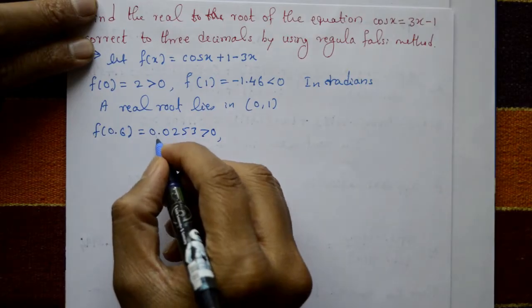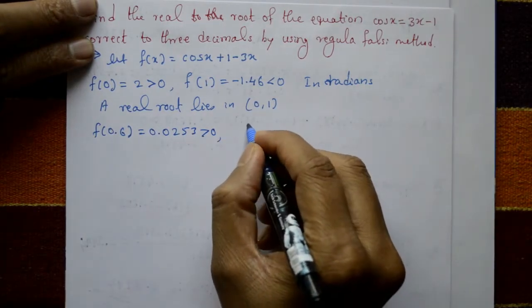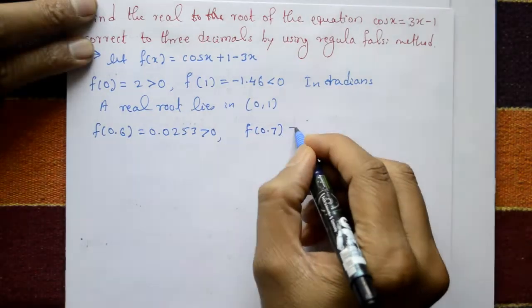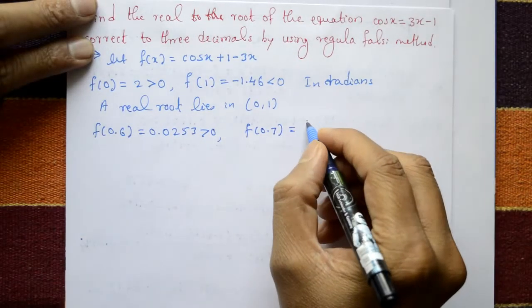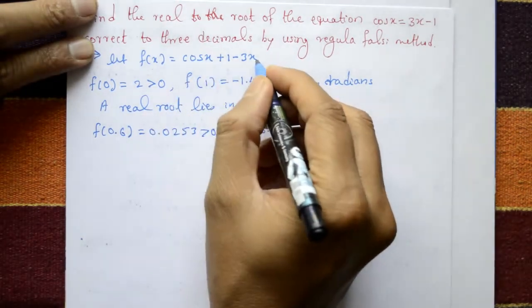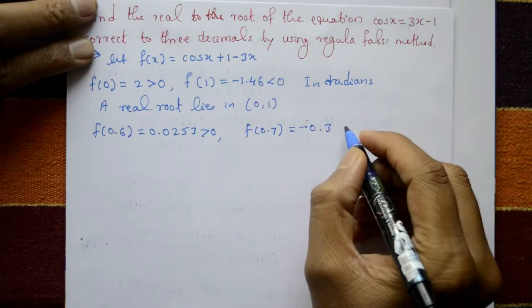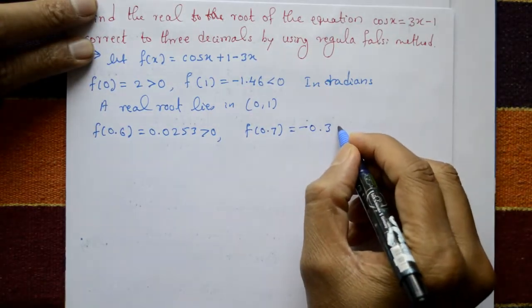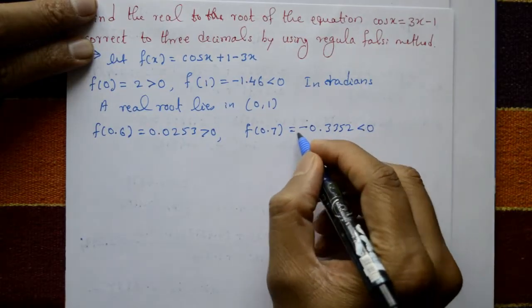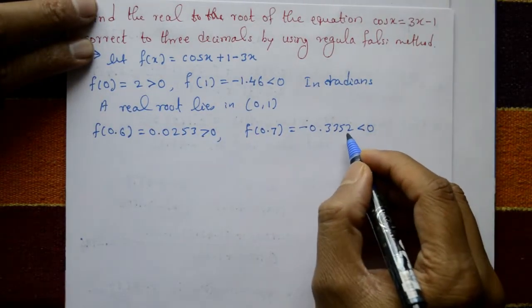f(0.6) = 0.0253 is positive and close to 0. f(0.7) = -0.3352, which is less than 0 and also close to 0. So there is one positive value close to 0 and one negative value close to 0.